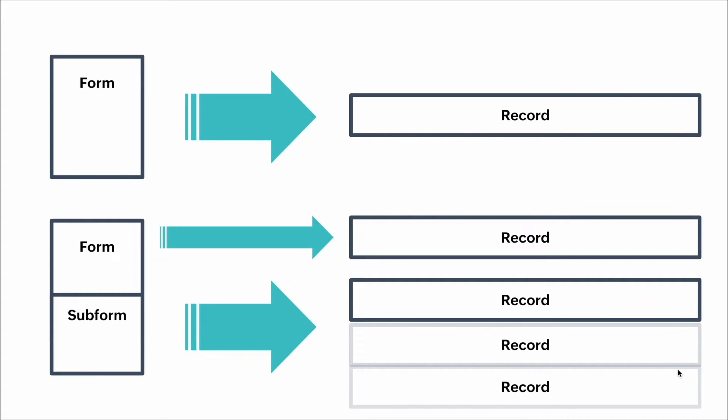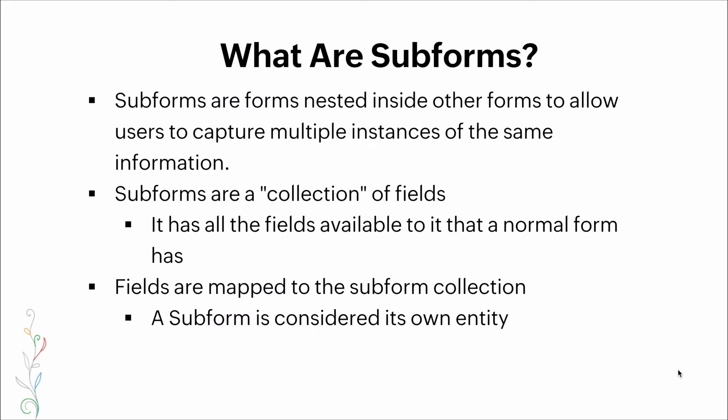Similarly, on the bottom side of that diagram, we have a form pointing to a record, and together with it we have a subform pointing at multiple records on the right side. That might not be very clear, so let me go ahead and explain further.